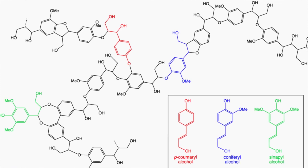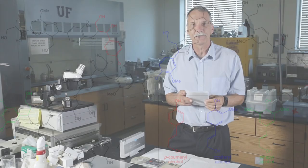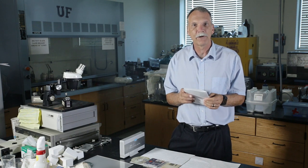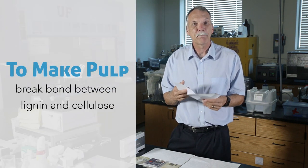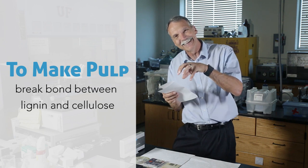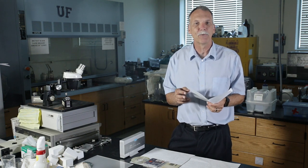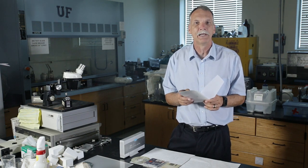Long chain aromatic ring chemicals that bind these cellulose chains together. If you're going to turn around and try to make pulp, what you have to do is separate or break that bond between the lignin and the cellulose. That was the challenge.